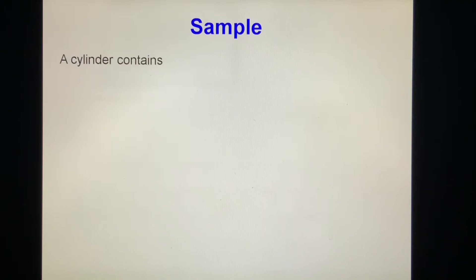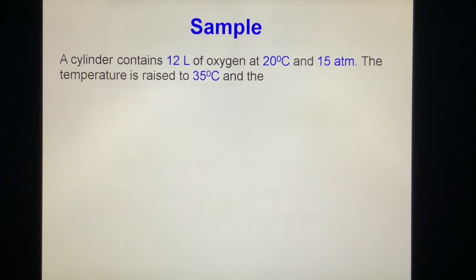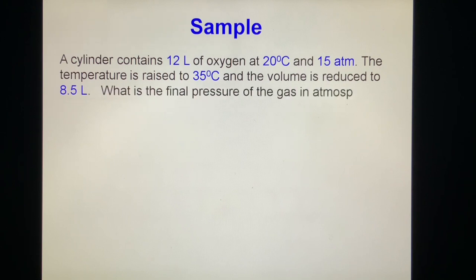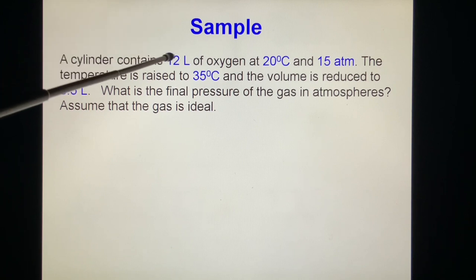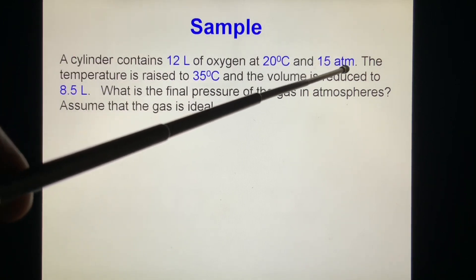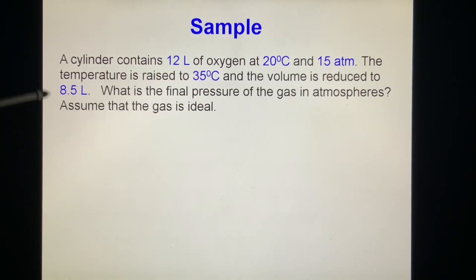Example: A cylinder contains 12 liters of oxygen at 20 degrees Celsius and 15 atmosphere pressure. The temperature is raised to 35 degrees Celsius, and the volume is reduced to 8.5 liters. First, what is the final pressure of gas in atmospheres? Assuming that the gas is ideal. This is very straightforward. We know initial volume, initial temperature, initial pressure, and final temperature, final volume. We want to find the final pressure.